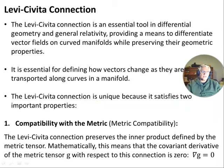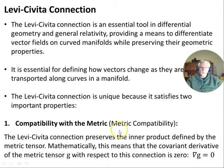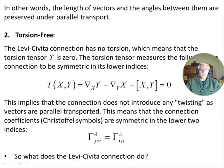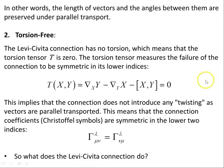Property one is metric compatibility. The Levi-Civita connection preserves the inner product defined by the metric tensor. Mathematically, this means the covariant derivative of the metric tensor g with respect to this connection is zero: ∇g = 0. So it preserves angles and magnitudes of vectors. In other words, the length of vectors and the angles between them are preserved under parallel transport.